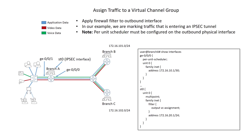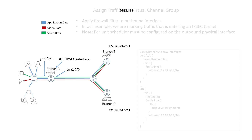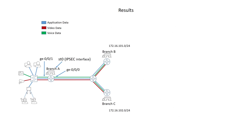Since our traffic is going to be encrypted, the VC assignment filter is applied as an output filter on the ST0 interface, which is performing IPsec encryption. If the traffic were not being encrypted, the output filter would be applied to the WAN-facing interface.